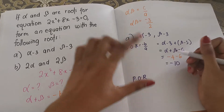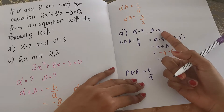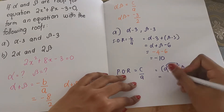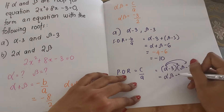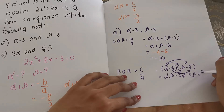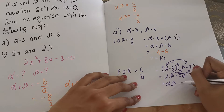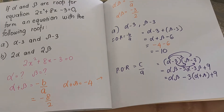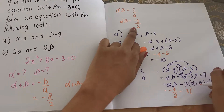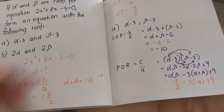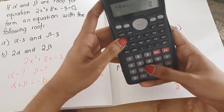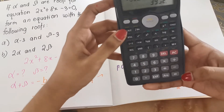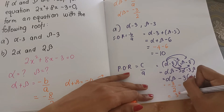Next, find the product of roots, which is C over A. So (alpha − 3)(beta − 3). Expanding: alpha·beta − 3·alpha − 3·beta + 9, which is alpha·beta − 3(alpha + beta) + 9. Substituting alpha·beta = negative 3/2 and alpha + beta = negative 4: negative 3/2 minus 3(negative 4) plus 9 equals negative 3/2 plus 12 plus 9, giving us 39/2. So the product of roots is 39/2.